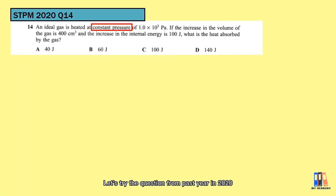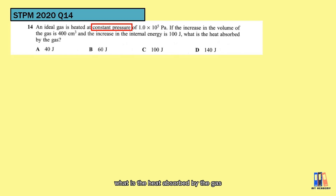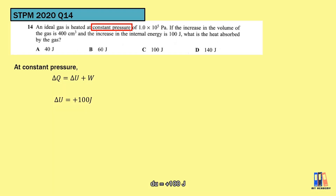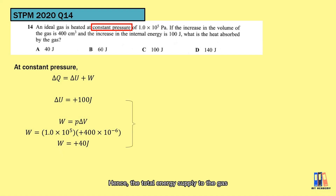Let's try a question from STPM 2020. An ideal gas is heated at constant pressure. If the increase in volume is 400 cm³ and the increase in internal energy is 100 J, what is the heat absorbed by the gas? The condition is constant pressure. Delta U = +100 J. Applying W = P dV gives W = +40 J since the volume increased. Hence, the total heat absorbed by the gas is 140 J.